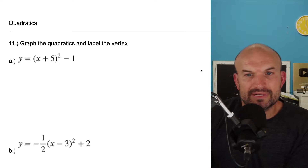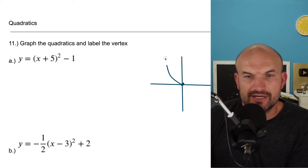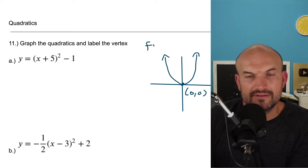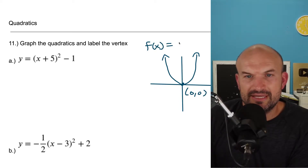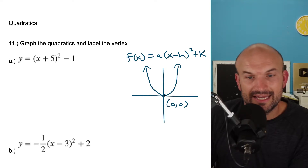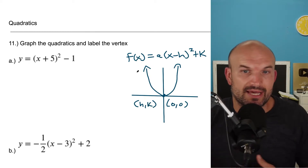Just remember when we're dealing with the parent graph, here are a couple things I want to quickly review. Here's your quadratic, and when we're talking about the vertex of the parent graph, it's at zero comma zero. We have f of x equals a times x minus h, quantity squared, plus k. The vertex is the bottom or the top of your graph, and we represent that as your h comma k.